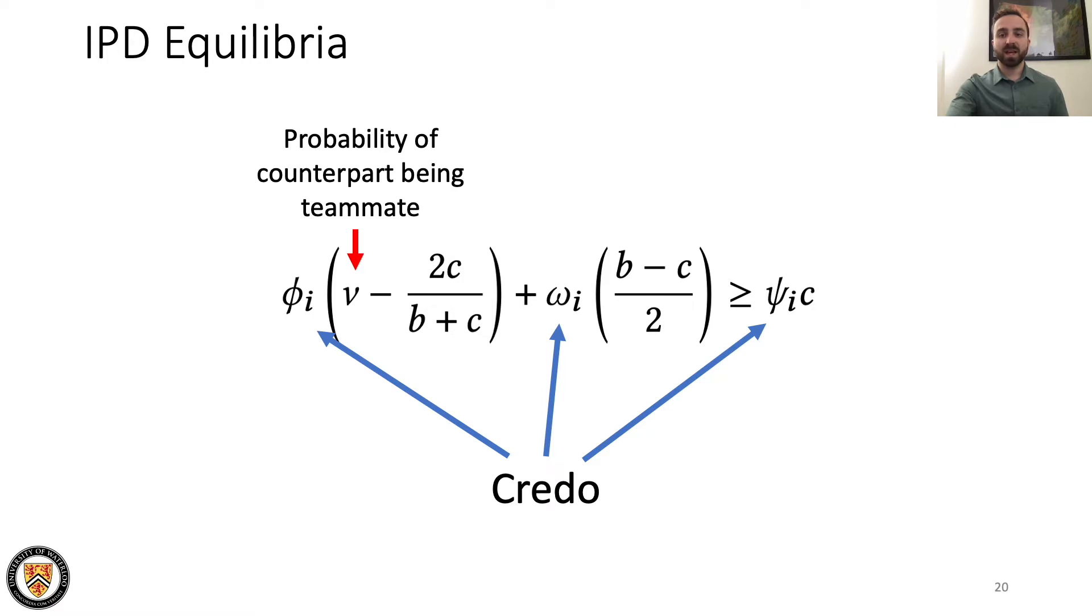We theoretically calculate the conditions where agents are better off choosing to cooperate as those which satisfy this inequality. Dependent on costs, benefits, the probability of being paired with a teammate, and credo.